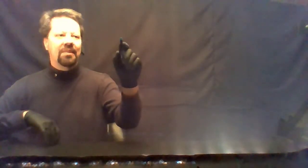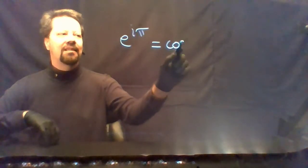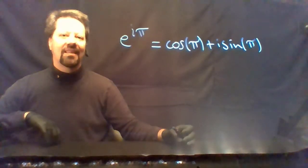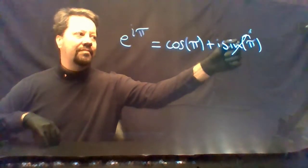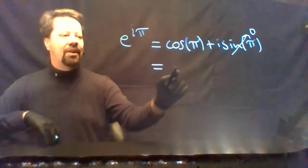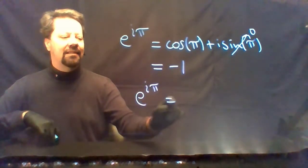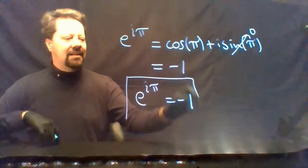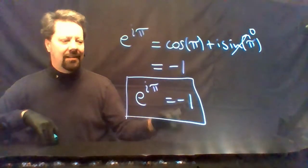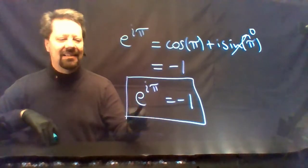Now that you know Euler's formula, consider e to the i times pi. That's cosine of pi plus i times sine of pi. Sine of pi is zero (the sine of every integer multiple of pi is zero), and cosine of pi is negative 1. So e to the i pi equals negative 1. This connects four of the most important numbers in mathematics: negative numbers, pi, the imaginary unit i, and Euler's number e — the discovery of each being an important milestone.